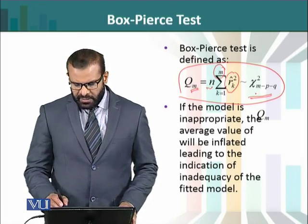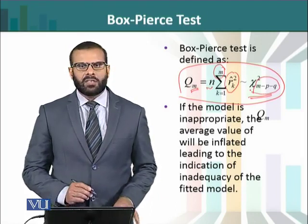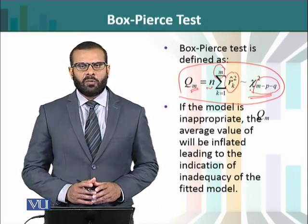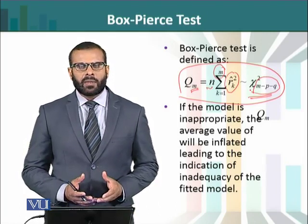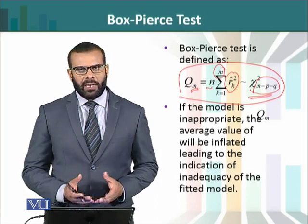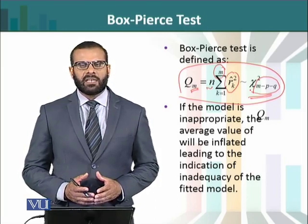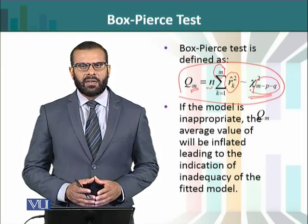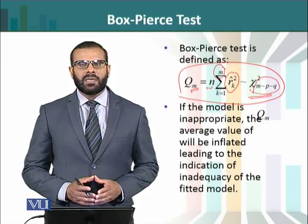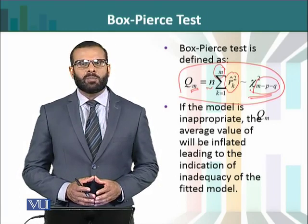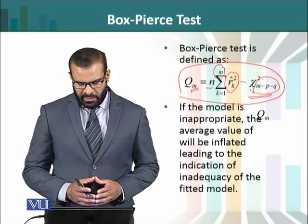یہ جو test statistic ہے اس کی distribution approximately chi-square ہے with degrees of freedom m minus p minus q۔ یہاں سے آپ سمجھ سکتے ہیں کہ m minus p minus q ایک degree of freedom ہے — چونکہ chi-square کی degree of freedom ایک non-negative positive number ہونی چاہیے، اس وجہ سے ہم نے condition لگائی کہ m must be greater than p plus q، جس کی وجہ سے m minus p minus q ہمارے پاس ایک positive number آ جائے گا۔